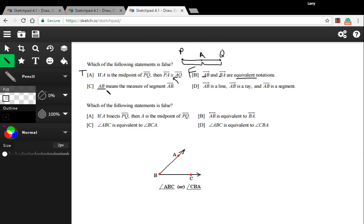C says AB means the measure of segment AB. That is true. The length between two points, we just note by writing the two points. So that means the length between A and B. And this one says AB is a line, AB is a ray, and AB is a segment. And that's correct because you've got the two arrows on the top of the first one, the one arrow on the top of the second one, and no arrows on the segment.